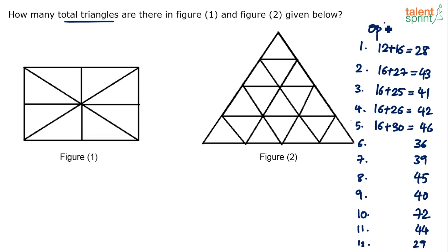Usually we get only four options, but because of your talent here we have got 12. Now let's do the counting. We've discussed how to count — what's the easiest way in such cases? Use the smallest sections in the given figure and then count all the possible combinations.